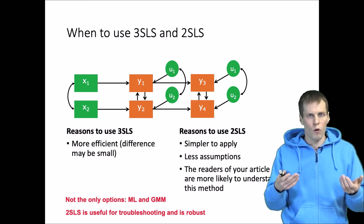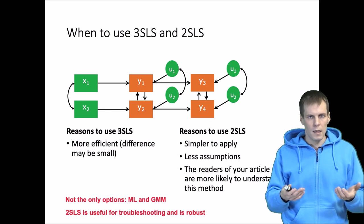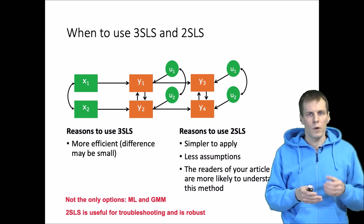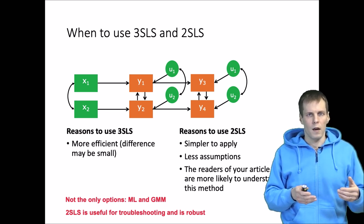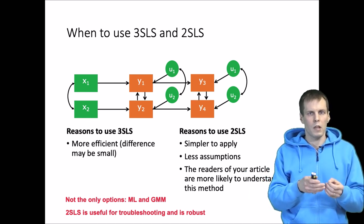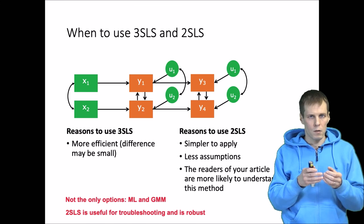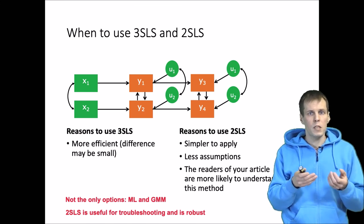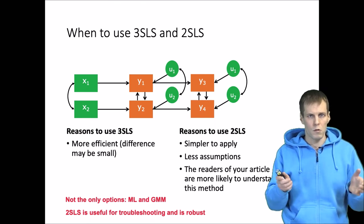And this is more robust. Two-stage least squares, as I said before, does not rely on assumptions from other parts of the model. It only relies on the assumption that the part we are currently estimating is correctly specified. So if there is a misspecification in the model, its effects are local instead of spreading throughout the system.